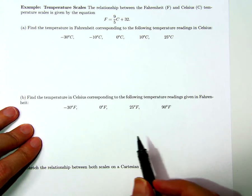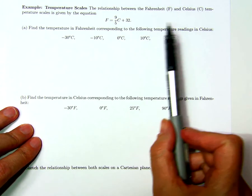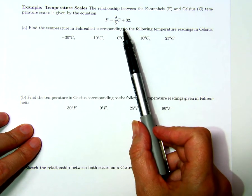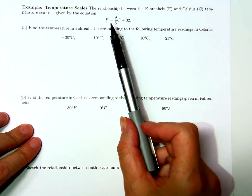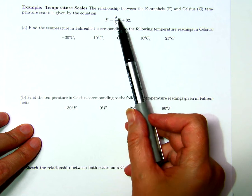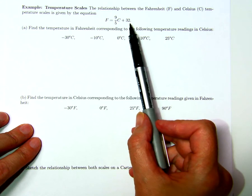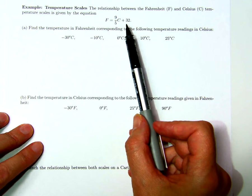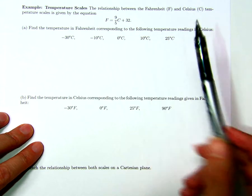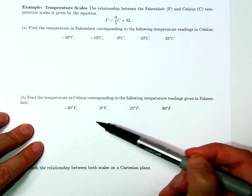The relationship between the Fahrenheit scale and the Celsius scale for temperature is also a linear one. The Fahrenheit reading is 9 over 5 times the Celsius reading plus 32. We can use this to convert from Celsius to Fahrenheit and vice versa, from Fahrenheit to Celsius.